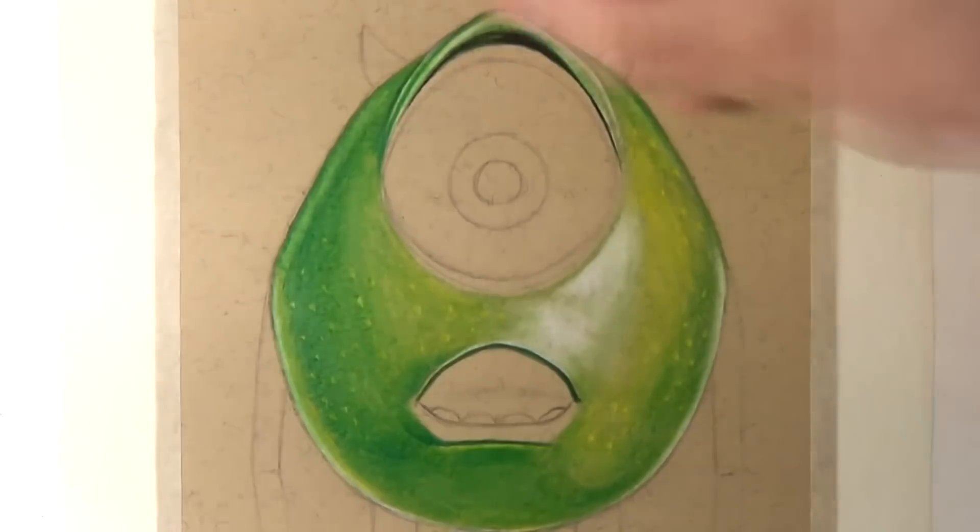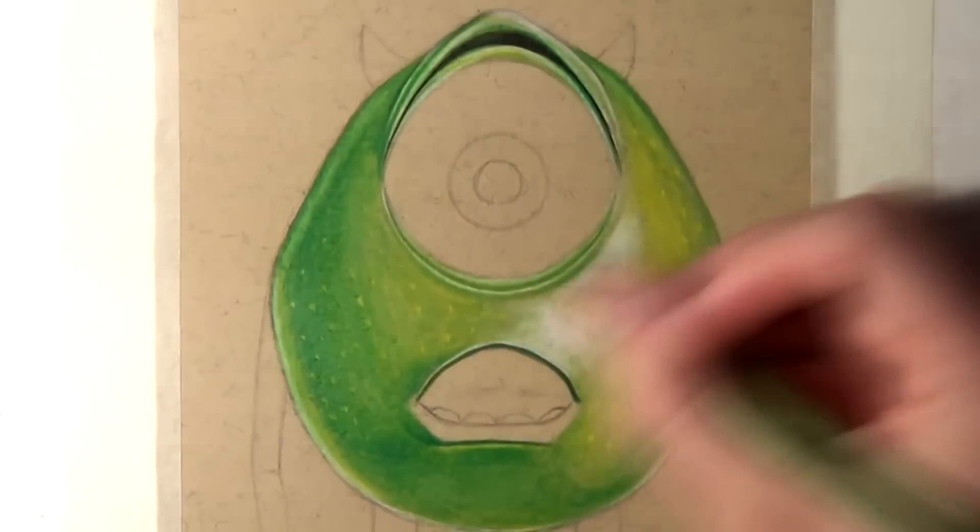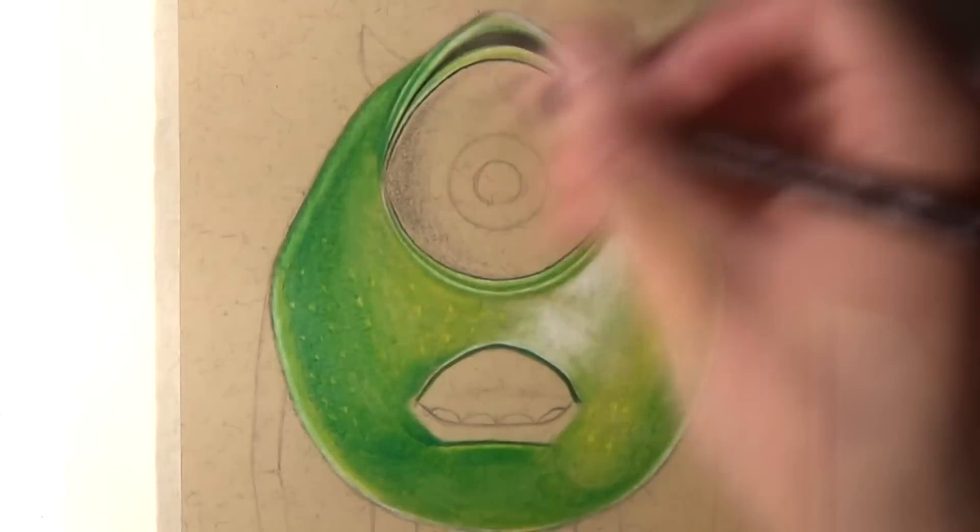For the coloring of his skin tones I used three different greens, apple green, true green and grass green and I also blended a bit of canary yellow to add some variation.